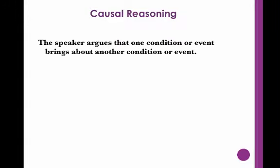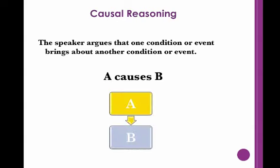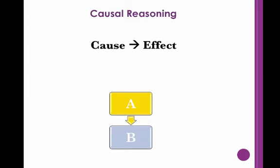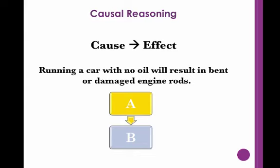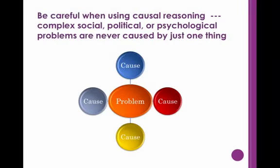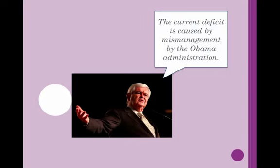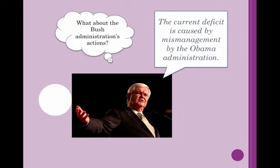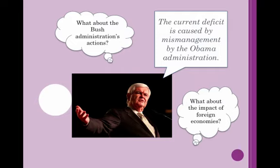The third major type of reasoning is causal reasoning, wherein one argues that one condition or event brings about another condition or event. In this form of reasoning, you can either move from cause to effect or from effect to cause. The claim that running a car with no oil will result in bent or damaged engine rods is reasoning from cause to effect; pointing out that Steve received an A-plus on his exam, therefore he must have studied hard, is moving from effect to cause. In this form of reasoning, you must be very careful, as complex social, political, or psychological problems are never caused by just one thing. There are usually a number of interrelated causes contributing to a problem. For instance, if a presidential candidate argues that the current budget deficit is caused by mismanagement of the current administration, he may be ignoring the impact of the previous administration's contributions to the current economic conditions or the impact of foreign economies on the U.S. economy.